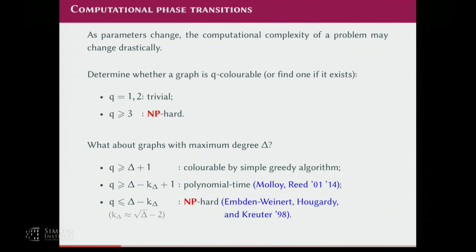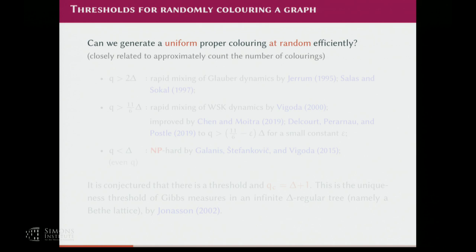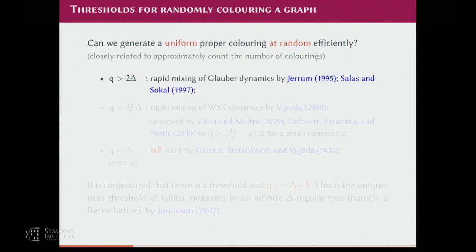So the decision version of coloring is very well understood even in the bounded degree case. But our program is about counting, and I will talk about approximate counting mostly. Approximate counting and uniform sampling are closely related, and especially in these regimes because of self-reducibility they are actually the same problem — can we generate a uniform proper coloring efficiently? There are early successes due to the Markov chain Monte Carlo approach by Jerrum and independently Salas and Sokal.